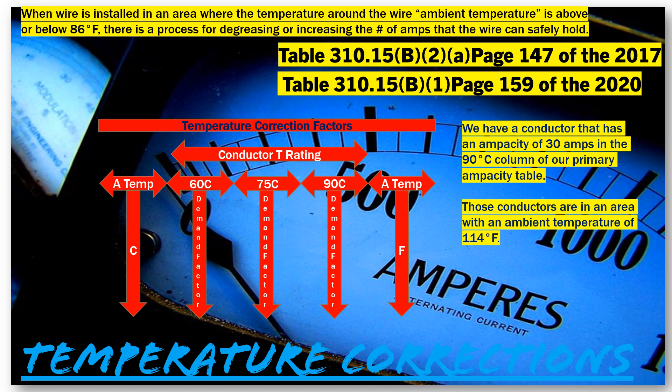Alright, let's look at a sample question. Say we have a conductor rated at 30 amps in the 90°C column of our primary ampacity table — that's Table 310.15(B)(16) in the 2017, or 310.16 in the 2020 — and those conductors are in an ambient temperature of 114 degrees Fahrenheit.